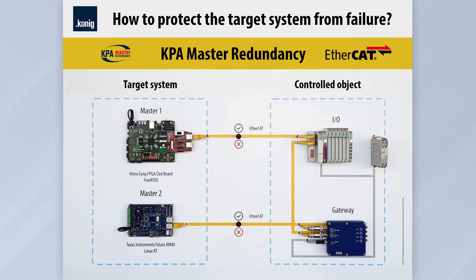The active master sends datagrams to the network and sequentially exchanges information with slave devices, while the passive master operates in sniffer mode, listening to the network and passing information through itself without any changes. At the same time, the passive master synchronizes its own cycle with the active master.